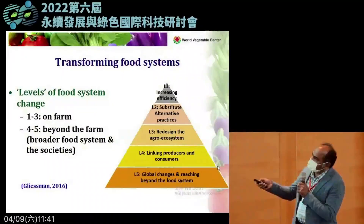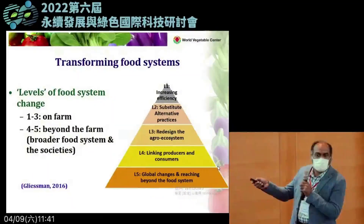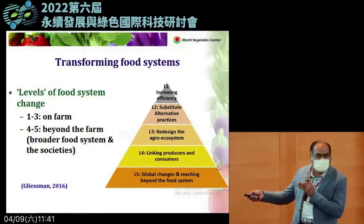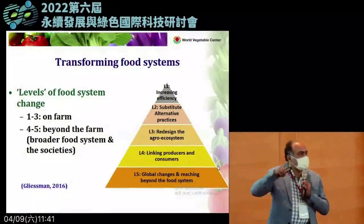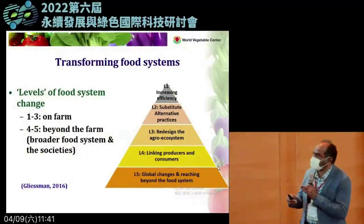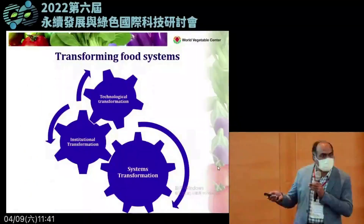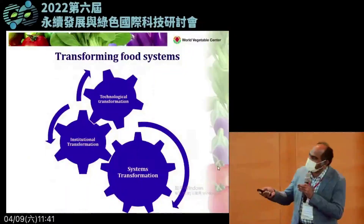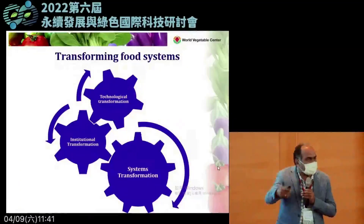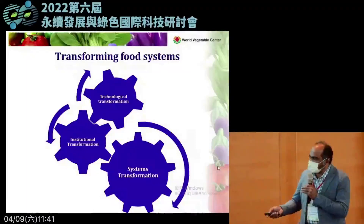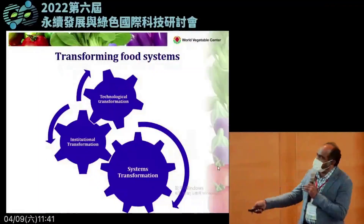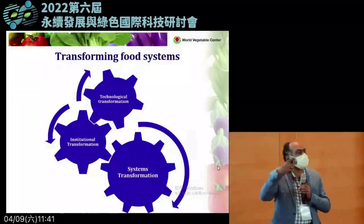Agriculture has to move away from its traditional yield-increasing focus so that food and nutritional security is ensured. It's not only a technological change — once you have a technological change, there must be institutional change involving who makes these technologies available, and then the entire systems change at the level of government policies. These are all interconnected so that the whole food system can change.